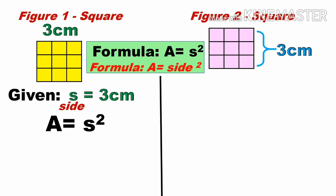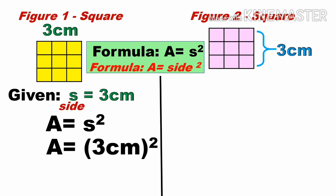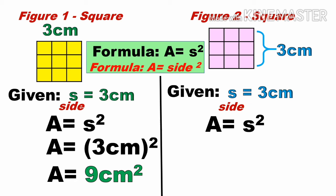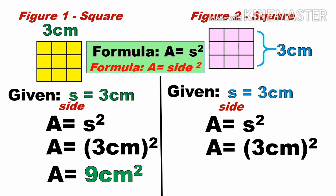Substituting the value, A equals three centimeters squared, which equals nine square centimeters. Therefore, the area of the first figure is nine square centimeters. Similarly, for the second figure, the side is also three centimeters, so A equals three squared equals nine square centimeters.